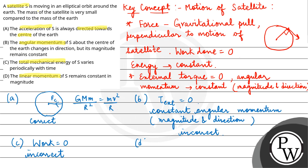And option D states that the linear momentum of S remains constant. Now because the satellite is in circular motion, at every point the direction of velocity is changing. Since the direction is changing, the linear momentum is not constant. So the fourth option is also incorrect.